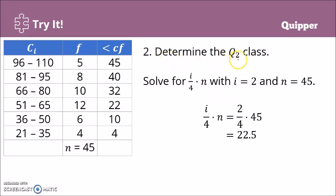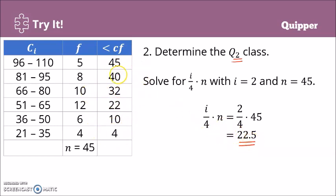Let's determine the second quartile class. We solve for i over 4 times n, where i is 2 and n is still 45. Substituting: 2 over 4 times 45 gives us 22.5. We look for the closest less than cumulative frequency that is greater than 22.5. The values greater than 22.5 are 32, 40, and 45 — but the closest one is 32. Note that 22 is less than 22.5 so it doesn't qualify. Therefore, this class is our Q sub 2 class.